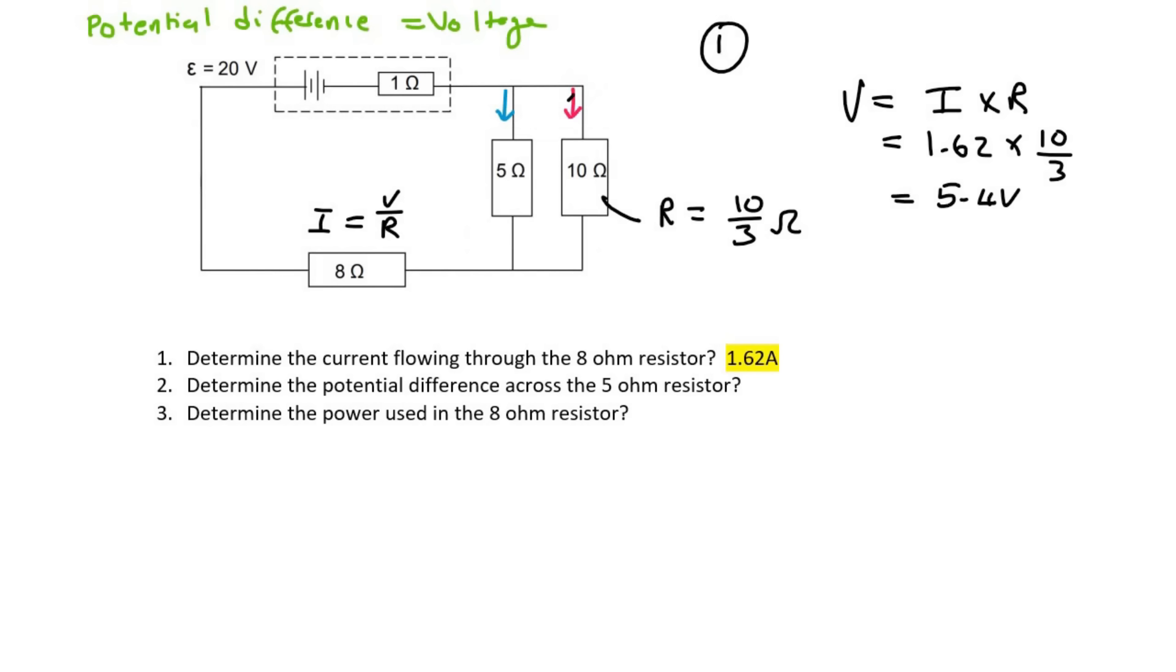So what does that mean? That means that this part of the circuit uses 5.4 volts. So does that mean that we should divide the answer by 2 for this one and for this one? No, not at all. It means that this one over here is using 5.4 volts. And this one over here is also using 5.4 volts.